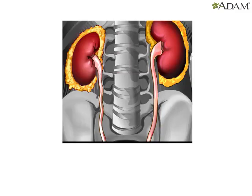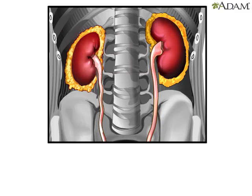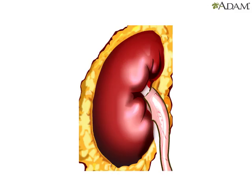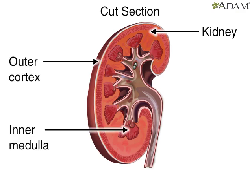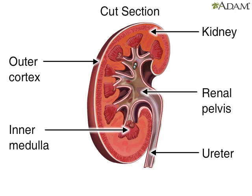Now let's enlarge the kidney to get a closer view. Here's a cross-section of the kidney. Urine flows from the outer cortex to the inner medulla. The renal pelvis is the funnel through which urine exits the kidney and enters the ureter.